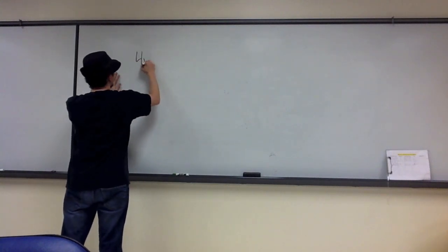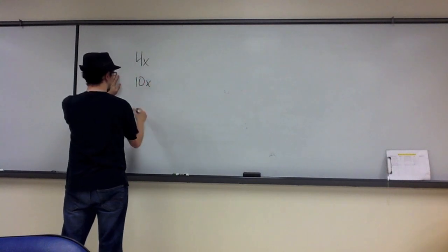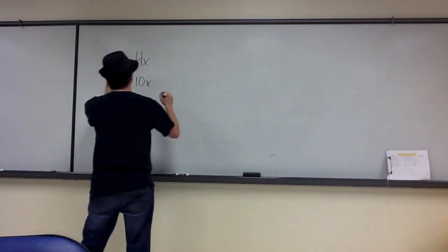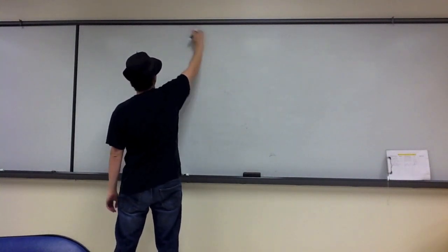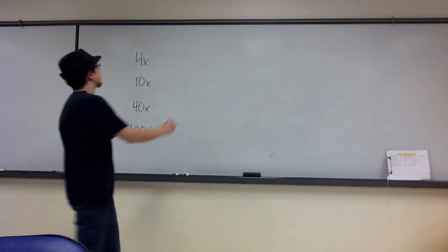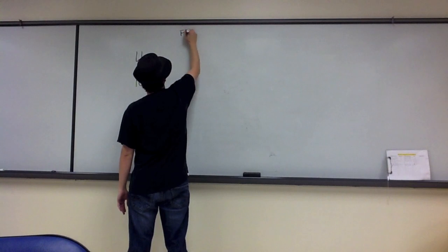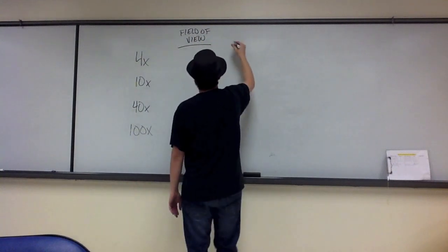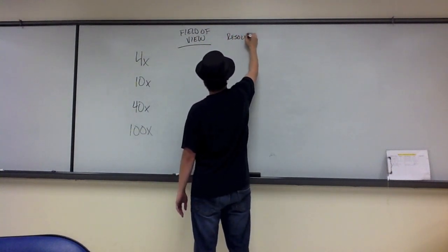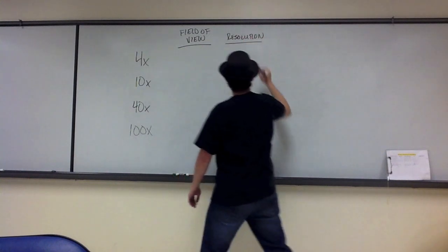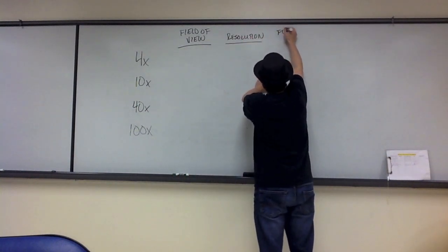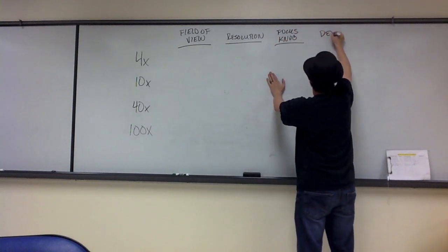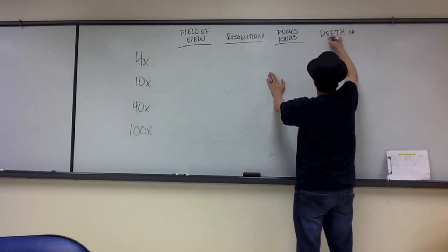I want to start by talking about four different objectives and various characteristics that apply to each of these four objectives. The various characteristics I want to talk about relating to these different objectives include field of view, resolution, the focus knob that we use with each of them, and the depth of focus.